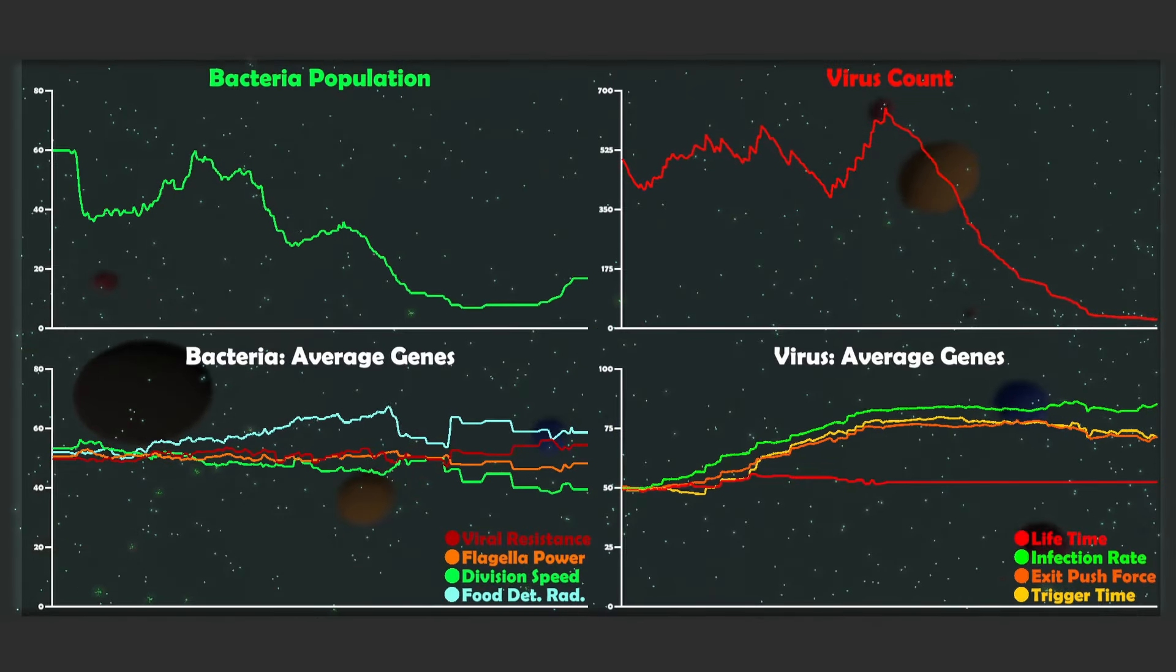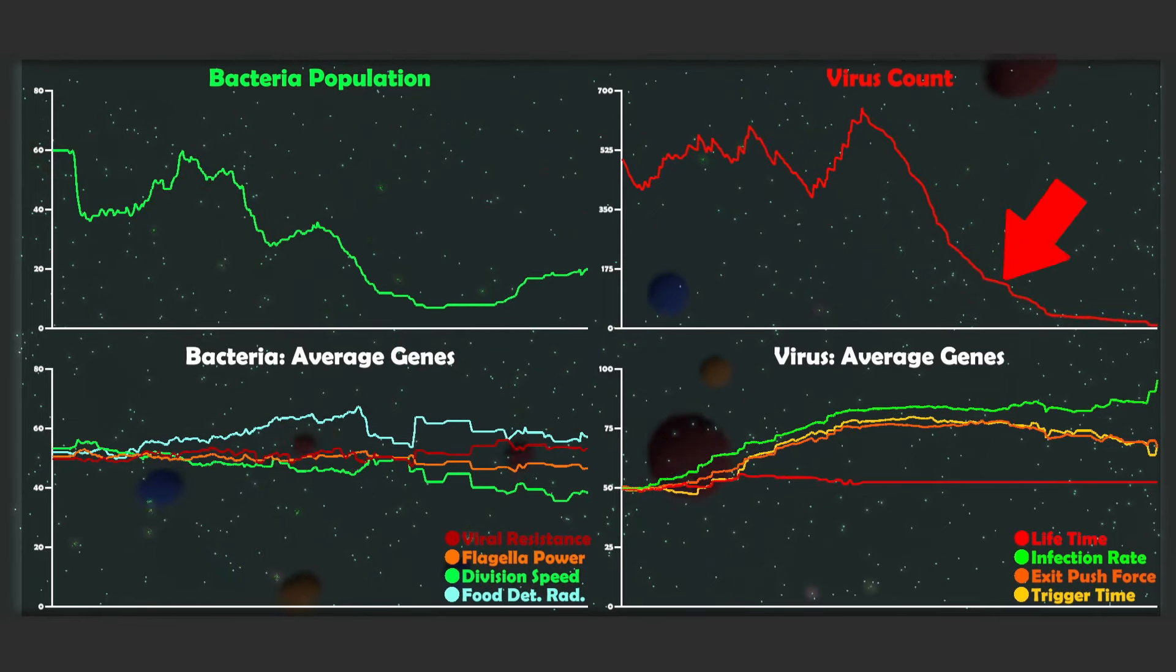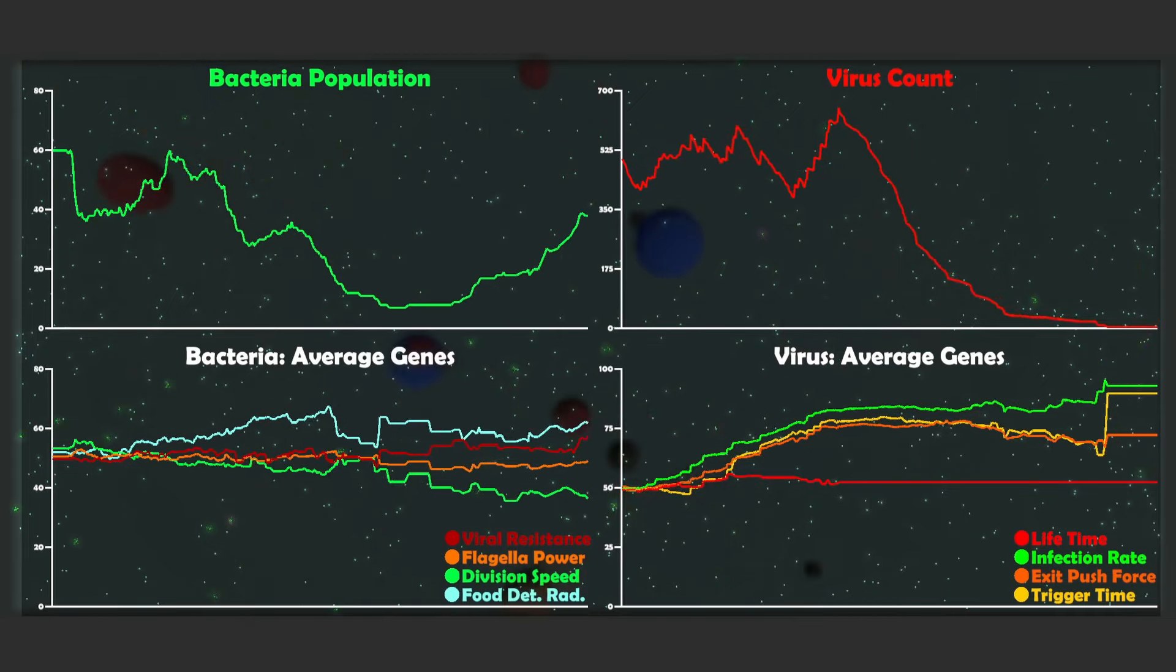So to replicate that, I added a new gene to the bacteria's genome, which is the viral resistance gene. As you can see that it was quite effective because even when the infection rate gene of the viruses were quite high, the viruses were completely wiped out.